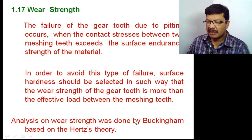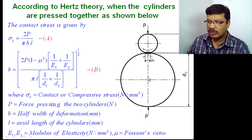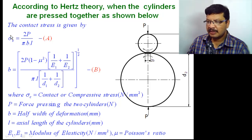Buckingham did the analysis based on Hertz theory, so first I'll explain what Hertz theory is. According to Hertz theory, when two cylinders are pressed together — the first cylinder of diameter d1 and the second cylinder of diameter d2 — when pressed under force p (total force acting is 2p), at the point of contact some deformation takes place. The total width of the deformation is 2b, and the contact stress given by Hertz is sigma_c equal to 2p divided by pi·b·l, where b is the half-width.